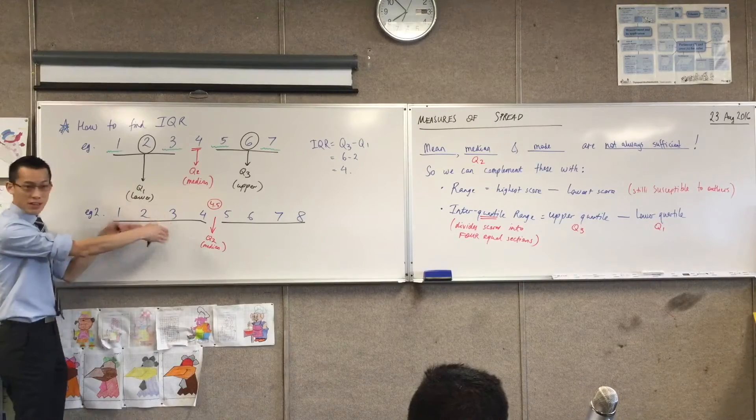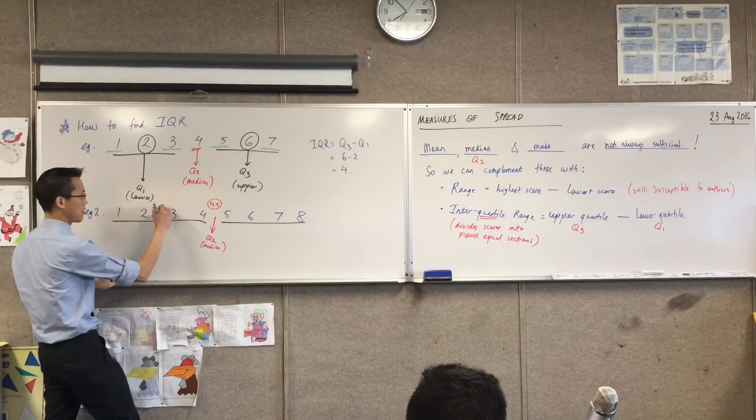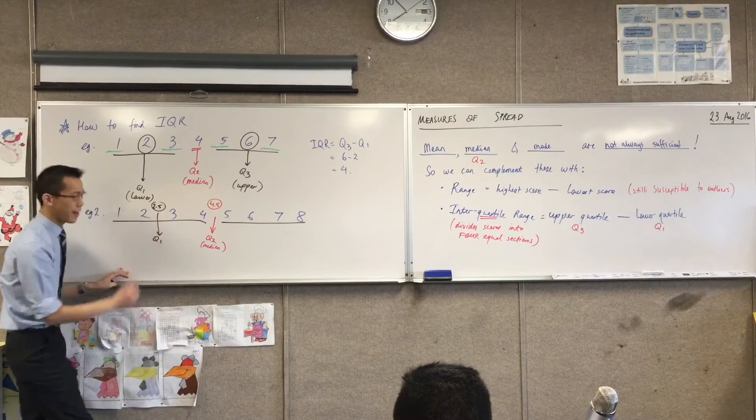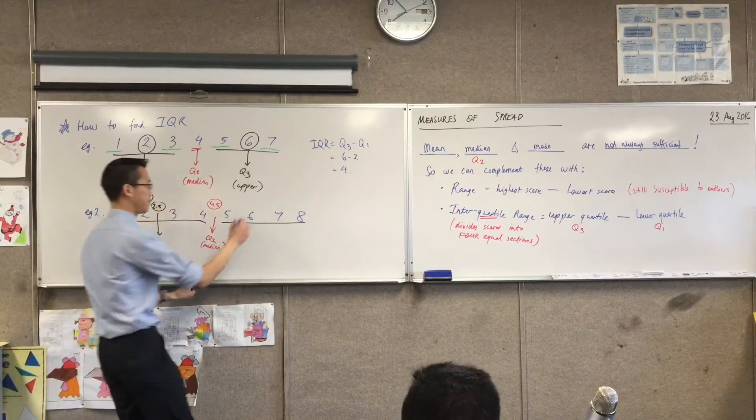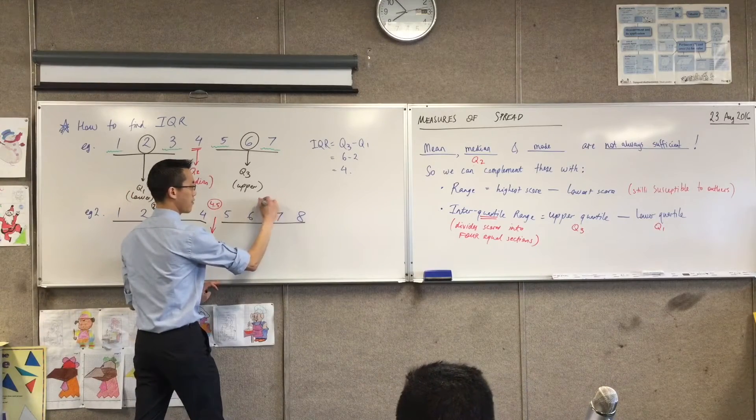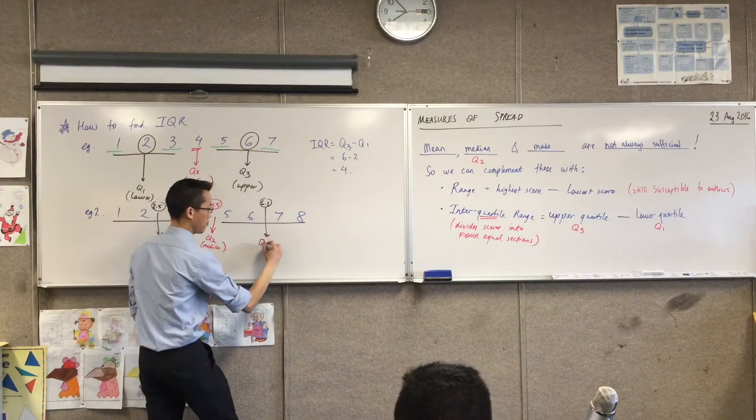So what's the median down here? Okay, so it's between two and three, so it's 2.5. So that is Q1. And I'm going to rehearse the same thing over here. 6.5. That's Q3.